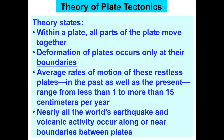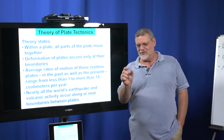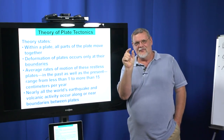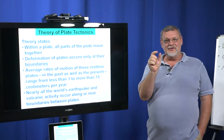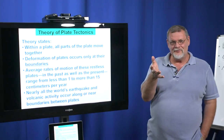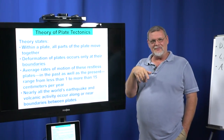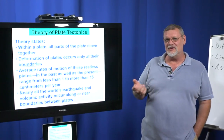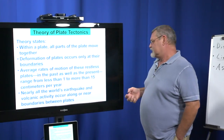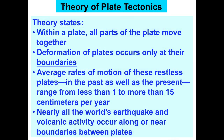The average rate of motion of these plates is anywhere from one to more than 15 centimeters a year. That's not very much in a year, but in a million years that's a million centimeters — divide by 100, that's 10,000 meters; divide by 1,000, that's 10 kilometers. So in a million years, that's 10 kilometers. And nearly all of the world's earthquake and volcanic activity occurs along these plate boundary lines.